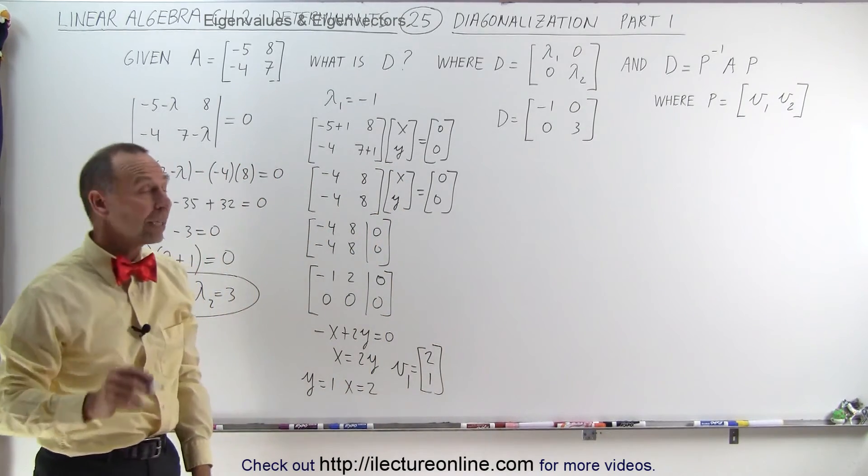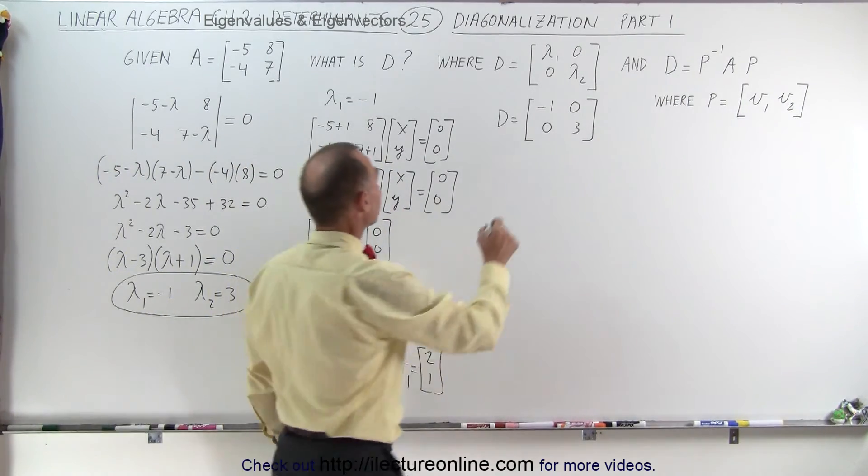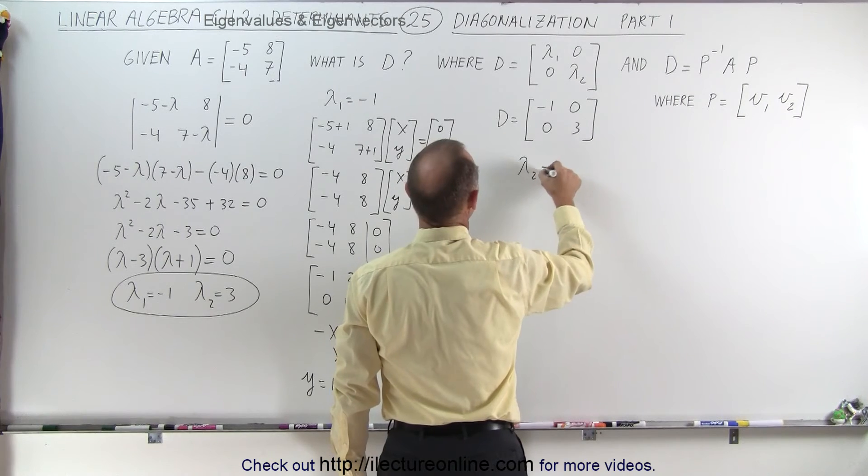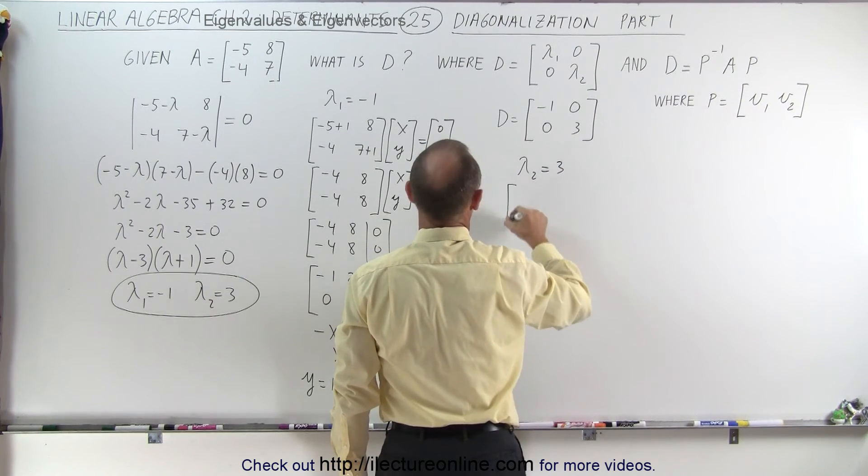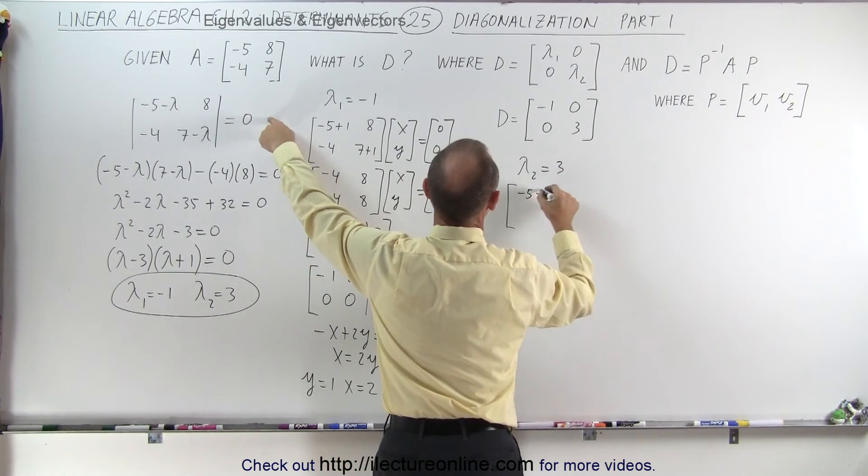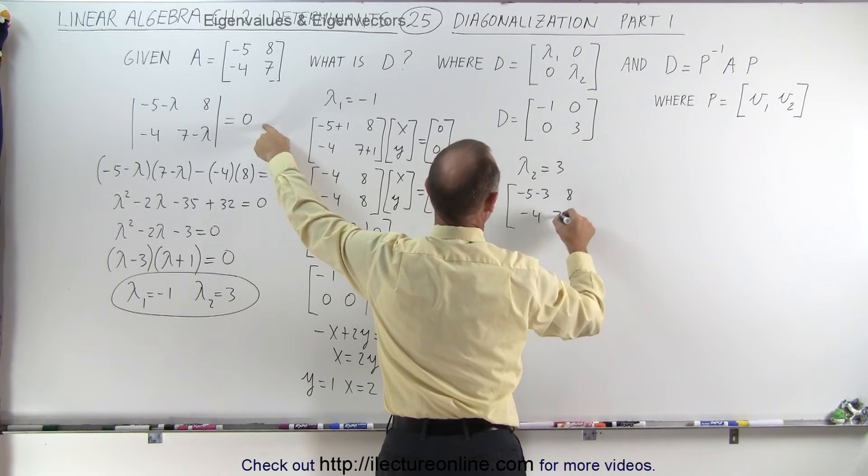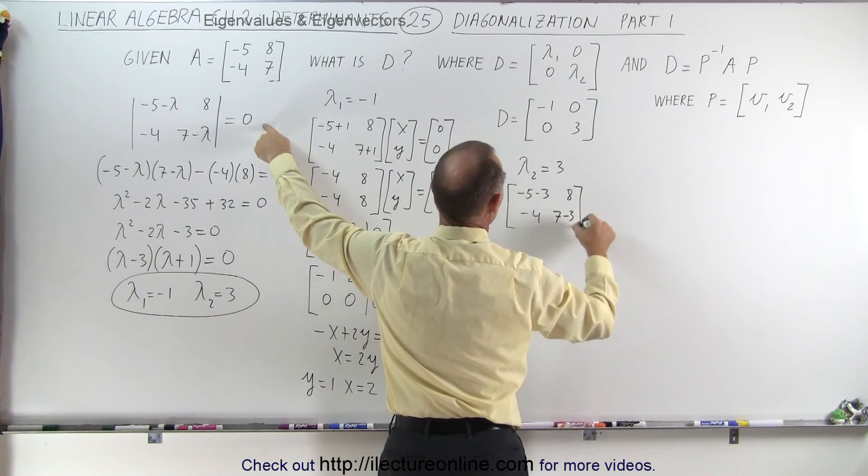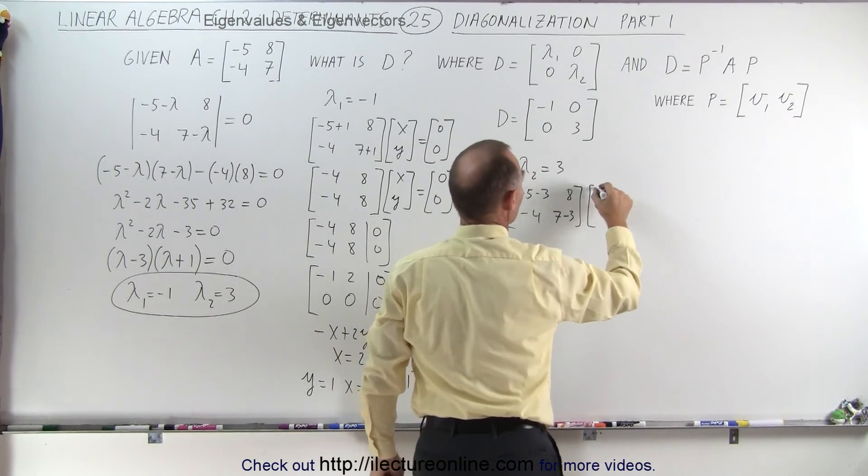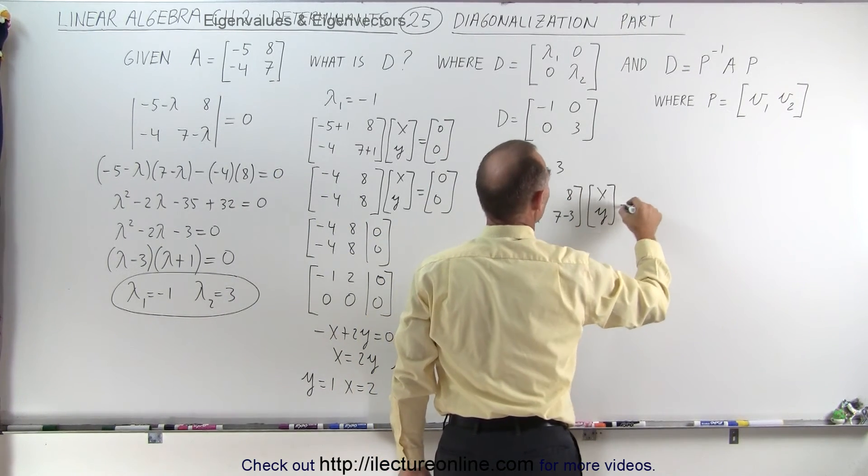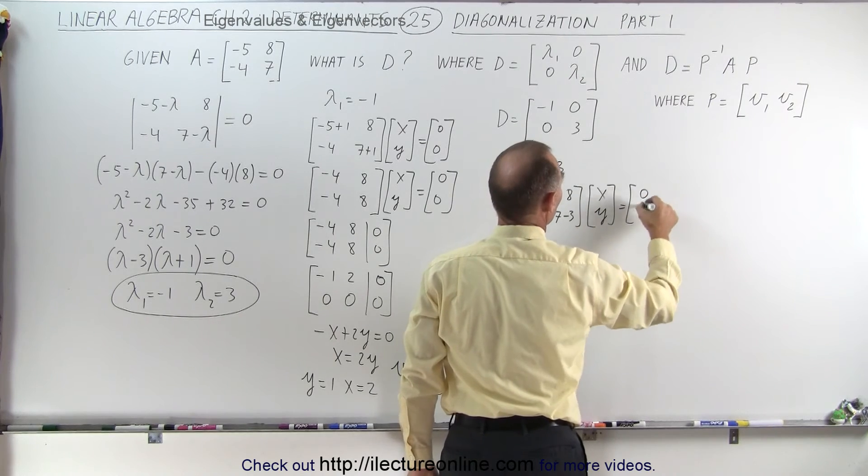Let's do this again with the second eigenvalue. Lambda sub 2 equals 3. Which means we take minus 5 minus 3, and 8. Negative 4, 7 minus 3. Multiply times the eigenvector x, y. And we should get the zero vector, 0, 0.